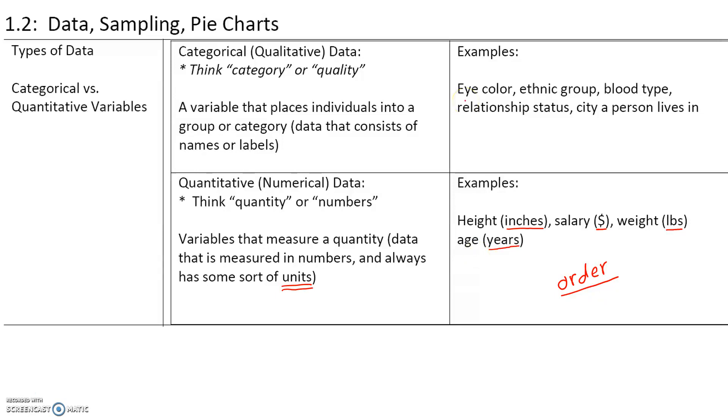Can we put people in order according to eye color? No, because one eye color isn't better or worse than another. Can we put people in order based on relationship status? Absolutely not. We can put them in different categories—you are single, you are married, you are in a relationship—but we can't order them in some kind of systematic way.